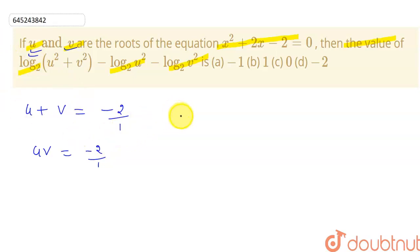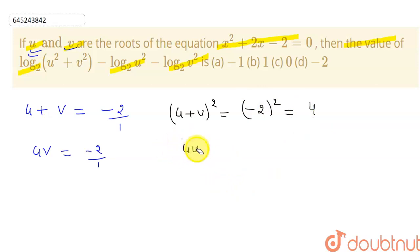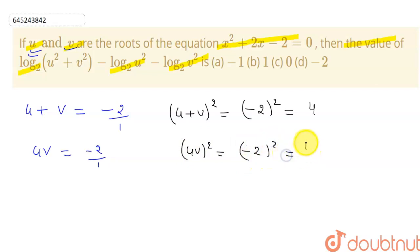From here, the value of (u + v)² equals (-2)² which is equal to 4. Similarly, (u·v)² equals (-2)² which is again equal to 4.